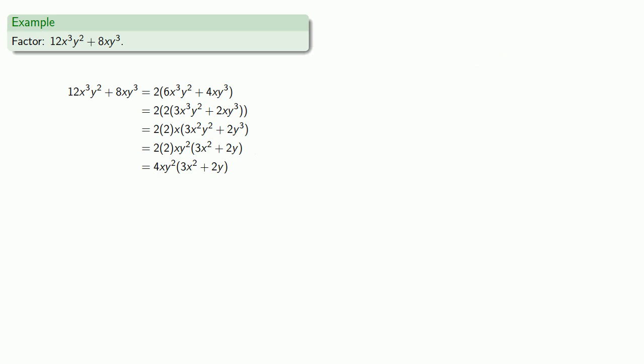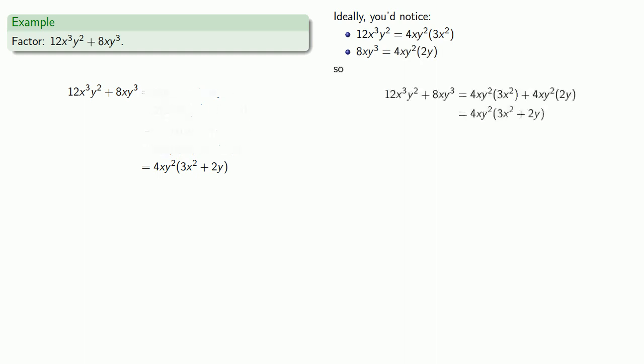You might say that's a lot of steps to get to the answer, and the truth is it is. We don't necessarily have to go through this every time. Ideally, you'd notice right from the start that 12X cubed Y squared is 4XY squared times 3X squared, and that 8XY cubed is also 4XY squared times 2Y, and then we could do our factorization in one step.